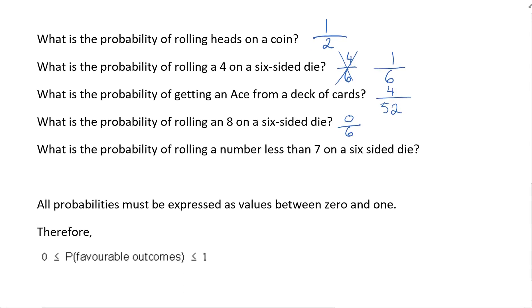What is the probability of rolling a number less than seven on a six-sided die? Well all of the numbers are less than seven so that would be six out of six which would be the same as one and zero out of six is the same as zero.